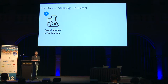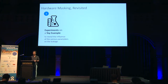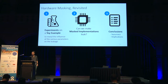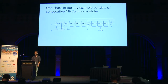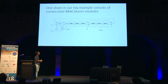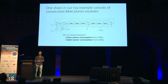In this talk, we investigate the effects of these parameters. First, we design a small experimental setup with a toy example: a set of mixed column instances chained after one another, forming one share of our masking scheme. We can activate and deactivate the last three mixed columns to play around with lower or higher power consumption within the masking scheme.